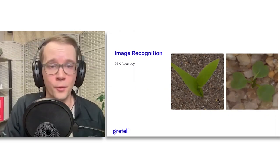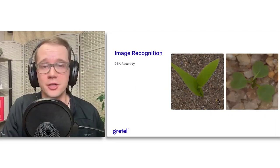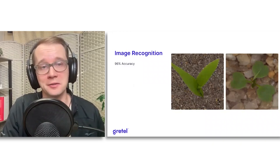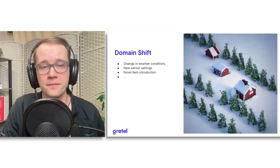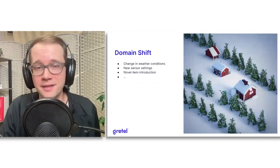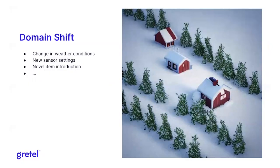However, the world is ever-changing, and in this case we may experience some domain shift. For example, what if we have an unseasonably cold day accompanied by a snowstorm? This is unexpected, and was not at all part of the original training pipeline. Naturally, performance drops, and the drop brings the entire operation to a halt.